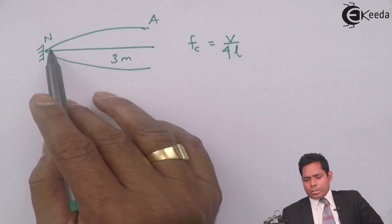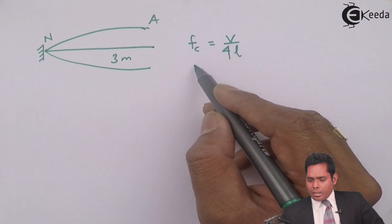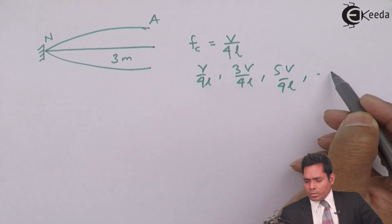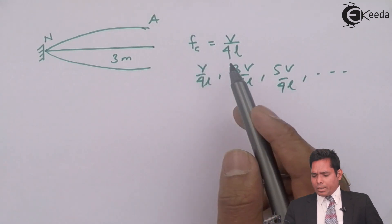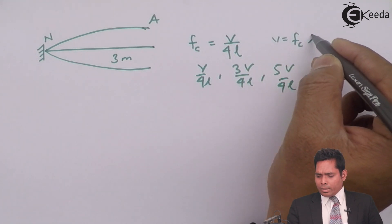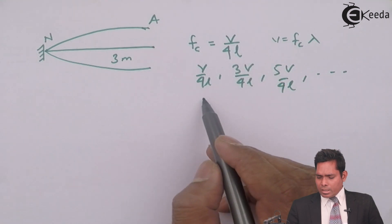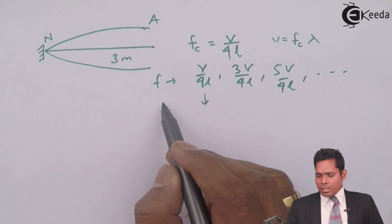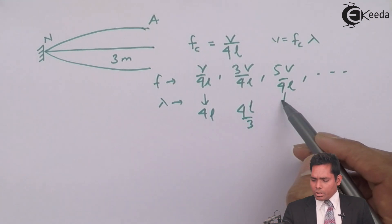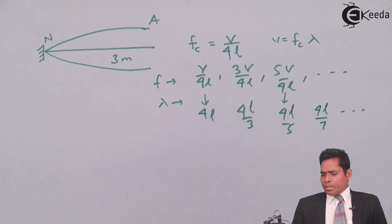Comparing with the closed pipe, where the fundamental frequency is V/(4L), the next harmonic is 3V/(4L), then 5V/(4L), and so on. In terms of wavelength, the first is 4L, then 4L/3, then 4L/5, then 4L/7, and so on. The distance between node and antinode is λ/4, and this length is also 3 meters, so λ/4 = 3, giving λ = 12.